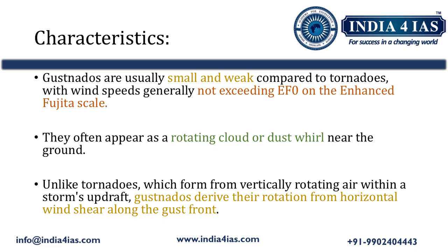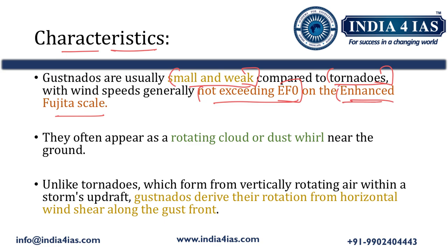Coming to the characteristics of Gustanados: in comparison to tornadoes, Gustanados are small and weak. Wind speeds do not exceed EF0 on the Enhanced Fujita scale, which is used to measure wind speed in tornadoes. In terms of appearance, they look like a rotating cloud or a dust whirl near the ground.